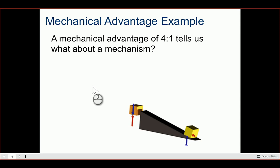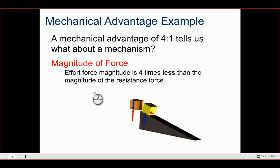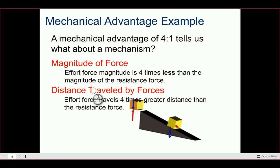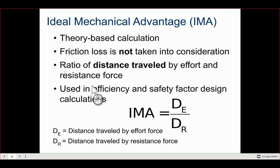A mechanical advantage of 4 to 1 means the effort force required is four times less, but you have to travel four times the distance. There's always a trade-off. One is the magic number: if your mechanical advantage is greater than one, you use less effort force but travel a greater distance. If it's less than one, you use greater effort force but travel less distance. Mechanical advantage can never be less than or equal to zero.